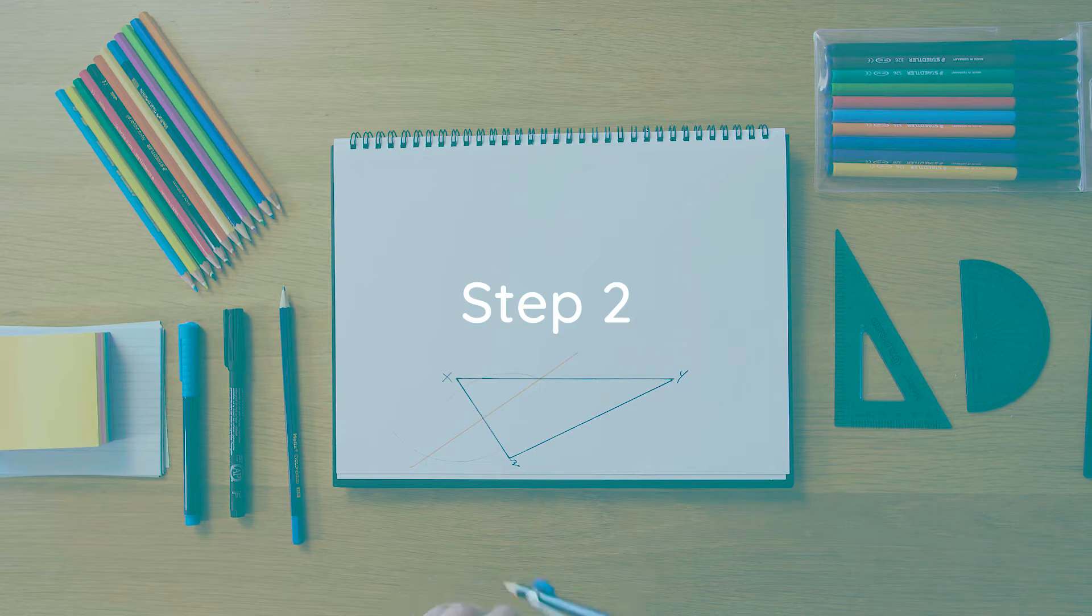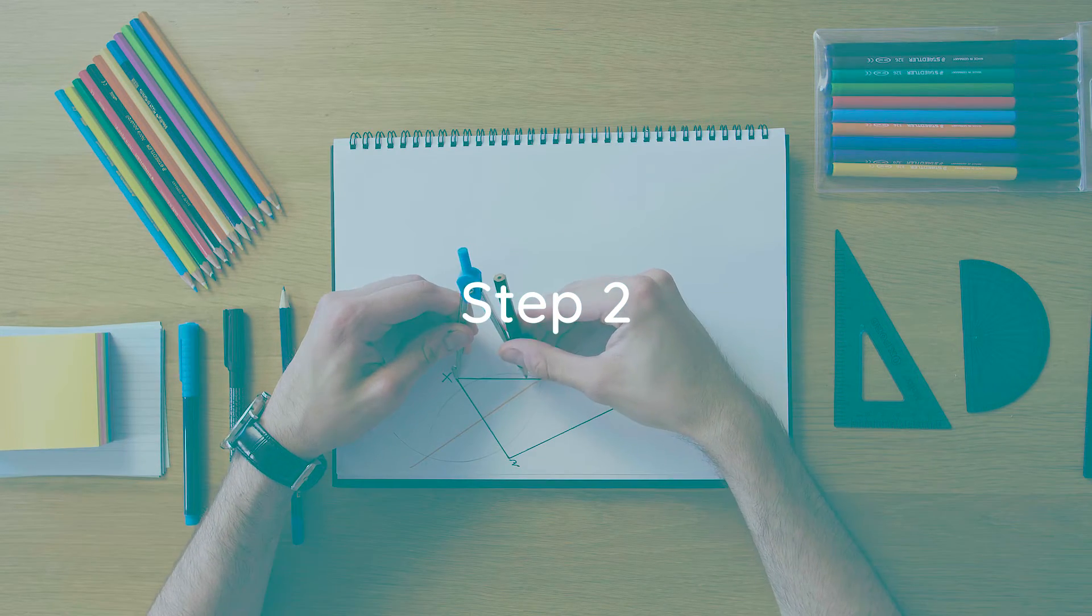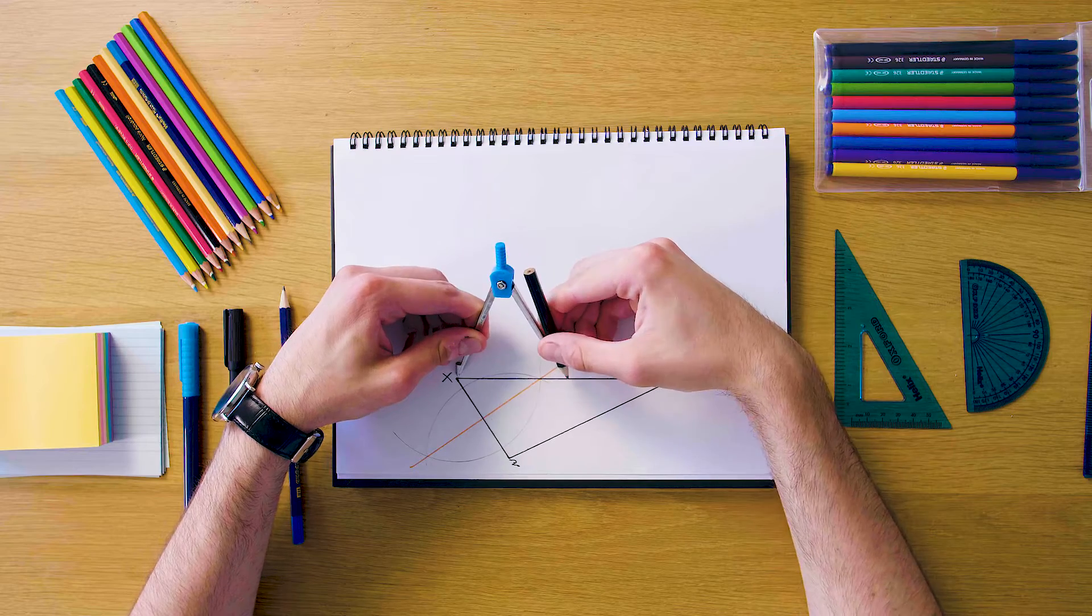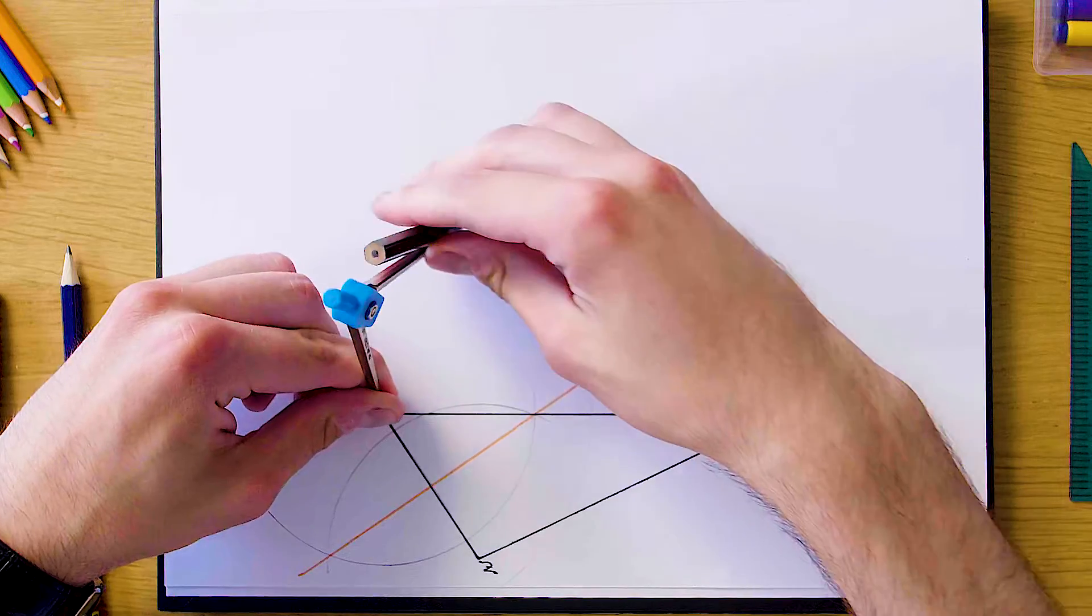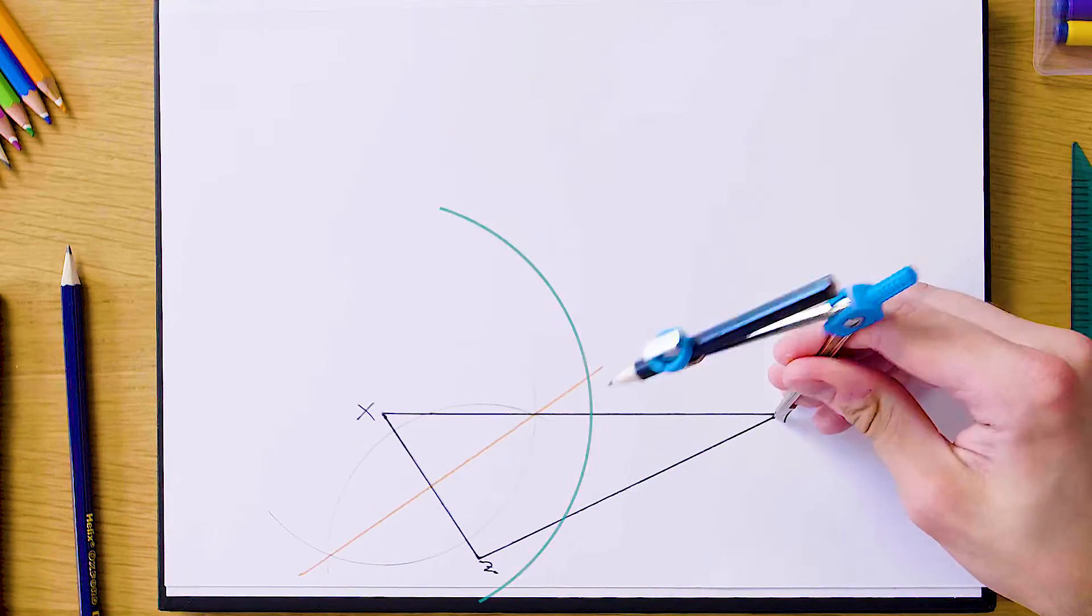And now we're just going to repeat this process for another line. So I'm just going to bisect the line x, y now. And once again, just making sure your compass exceeds half the length of the line. And we're going to swing two arcs here. And again from the point y.